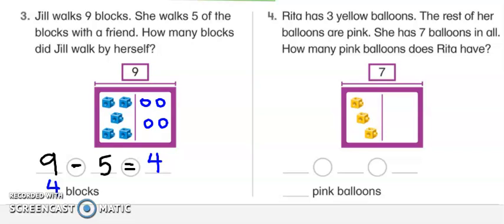So let's answer the question. How many blocks did Jill walk by herself? Four blocks. Jill walked four blocks by herself. You see how because you knew the whole, now you know a part, then you're missing the part. That's why you do subtraction.